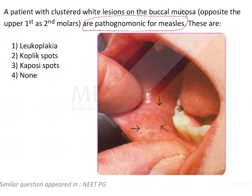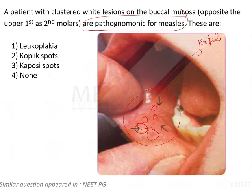The arrows are showing certain grayish papules and some erythematous papules. These small sand-papery lesions are known as Koplik's spots, and these spots are pathognomonic for measles.